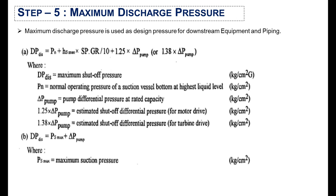In the fifth step, we will calculate the maximum discharge pressure. The maximum discharge pressure is the sum of the maximum suction pressure calculated earlier and the pump differential pressure at rated capacity. The pump differential pressure is multiplied by a factor depending on the driving force: 1.25 for motor-driven pumps and 1.38 for turbine-driven pumps. The maximum discharge pressure is important for designing downstream equipment and piping.